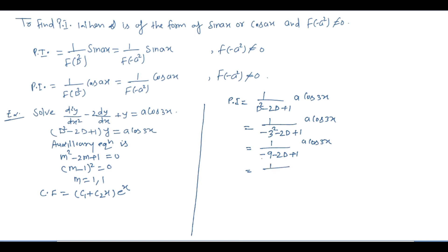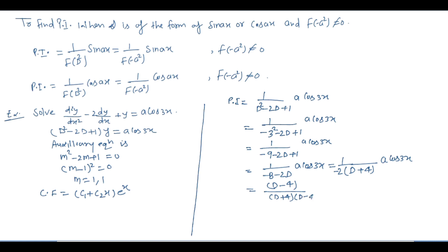−8 − 2D से −2 common लेने पर: 1/(−2(D + 4)) · a·cos(3x). नीचे (D + 4) का square बनाने के लिए ऊपर-नीचे (D − 4) से multiply करेंगे: (D − 4)/[(D² − 16)] · (−1/2) · a·cos(3x).